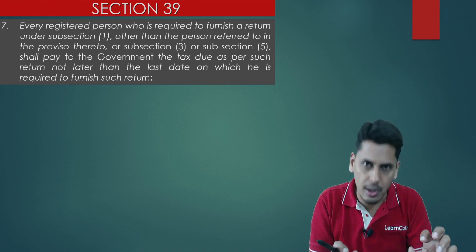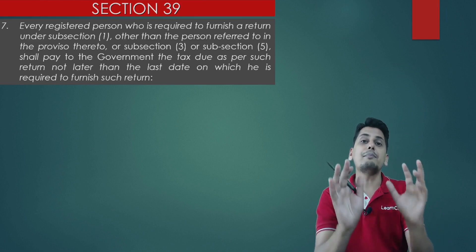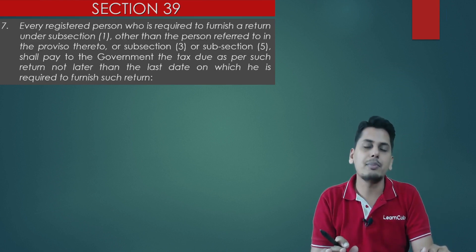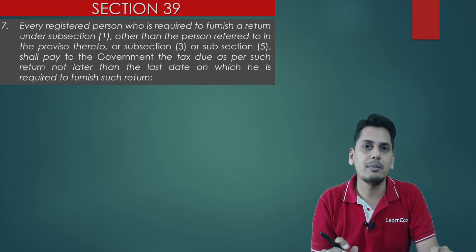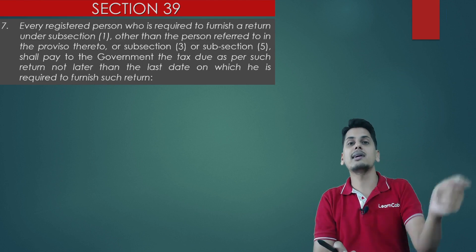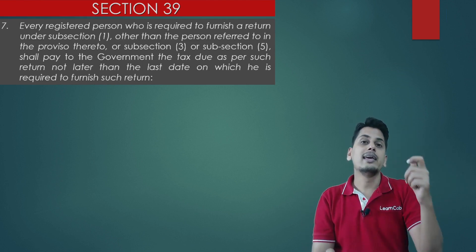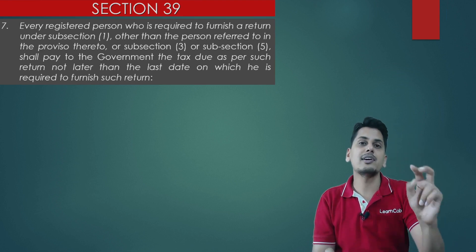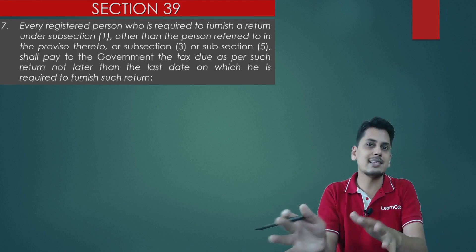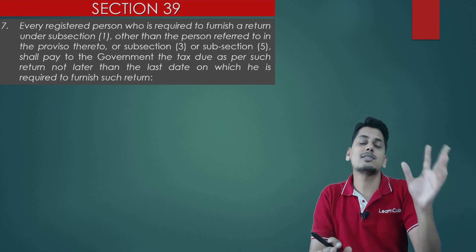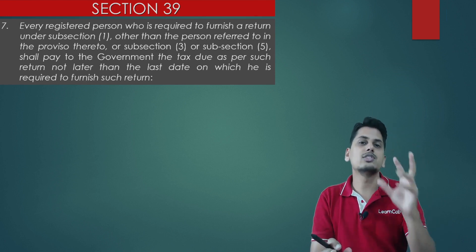First of all, the QRMP scheme itself is optional. Having gone into the QRMP scheme, there is a simple method offered by the government to compute the taxes to be deposited in the first and second month of the quarter. This simple method is also optional. If a registered person wants, he can choose the QRMP scheme and still do self-assessment for the first and second month, or he can choose the simple method if he finds self-assessment too complex.